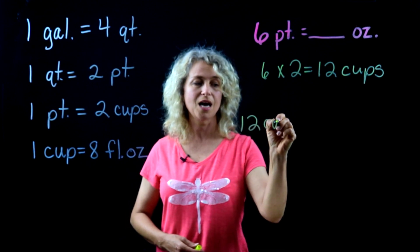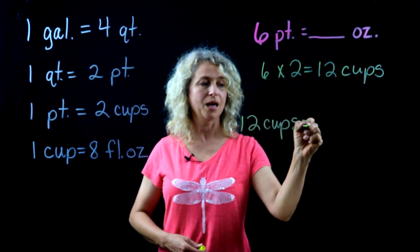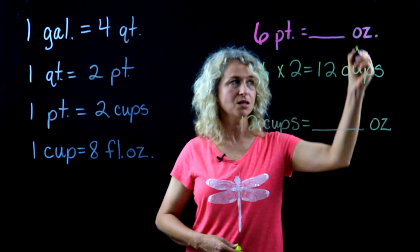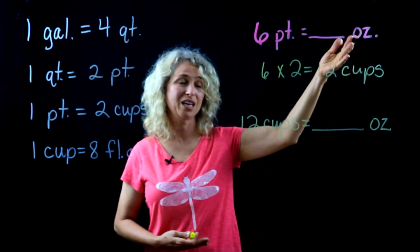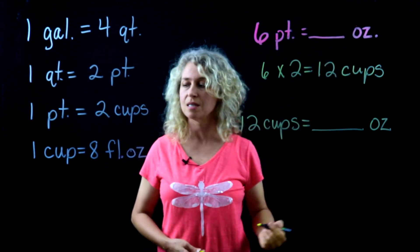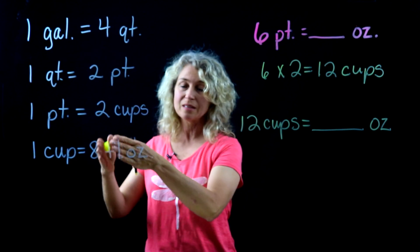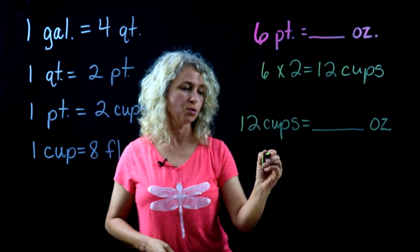Now we can take our twelve cups and change it to our final answer that we're wanting to achieve, which is fluid ounces. So how many fluid ounces are in a cup? There are eight, so we'll do eight times twelve.